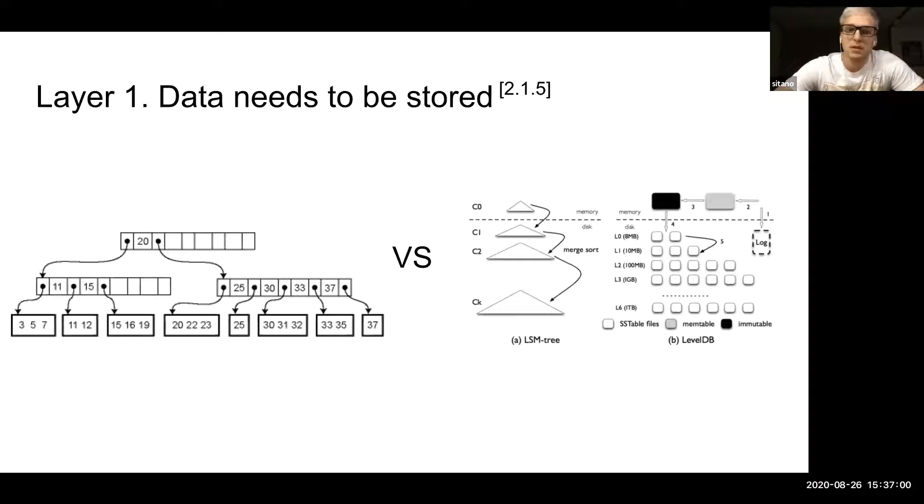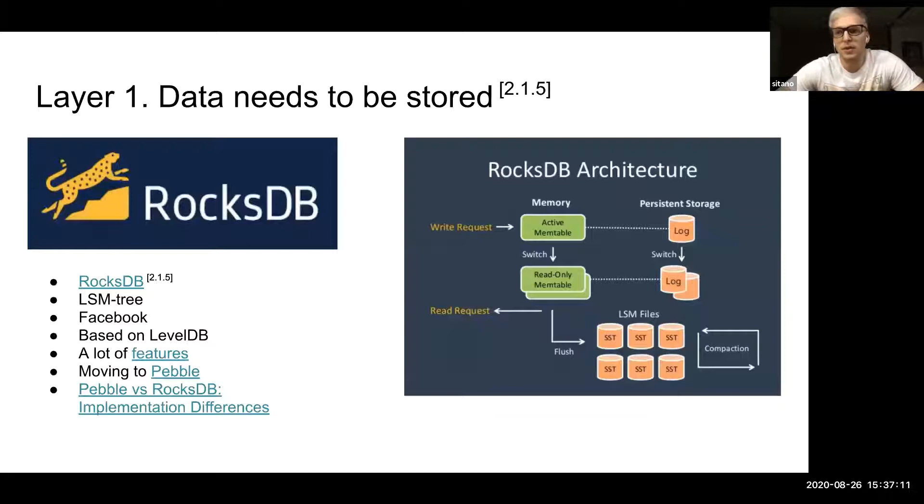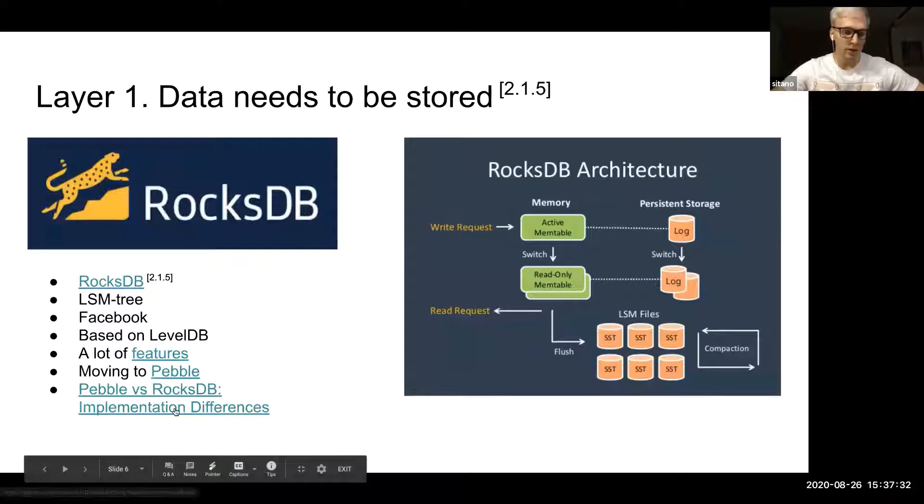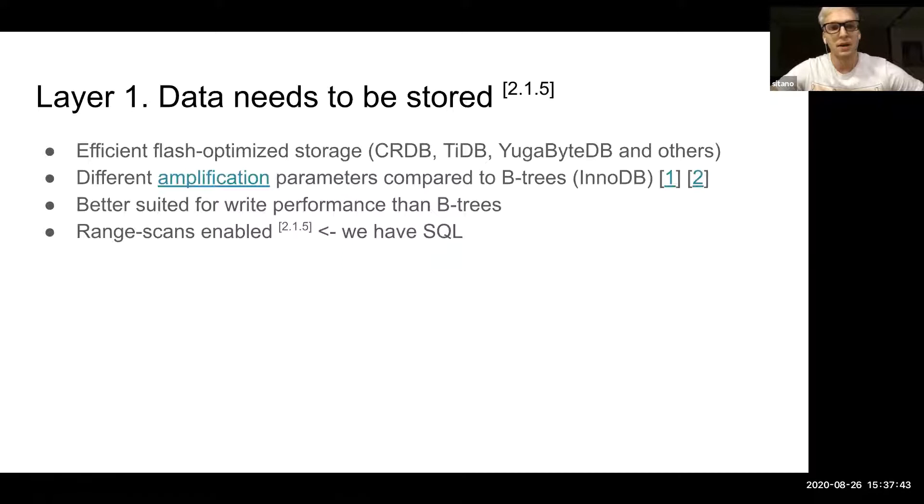Nowadays we have a choice between B-trees and LSM trees. LSM trees are used mostly everywhere, and CockroachDB is not an exception. They are using RocksDB currently for their local data storage, and they are working hard on porting it to Go with some differences. You can find out reading Pebble versus RocksDB. Modern LSM trees are highly optimized for flash drives and mostly used as a key-value store with range scans.